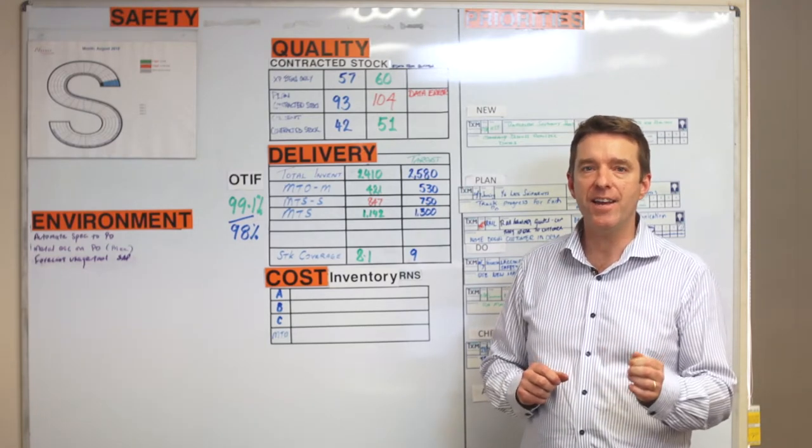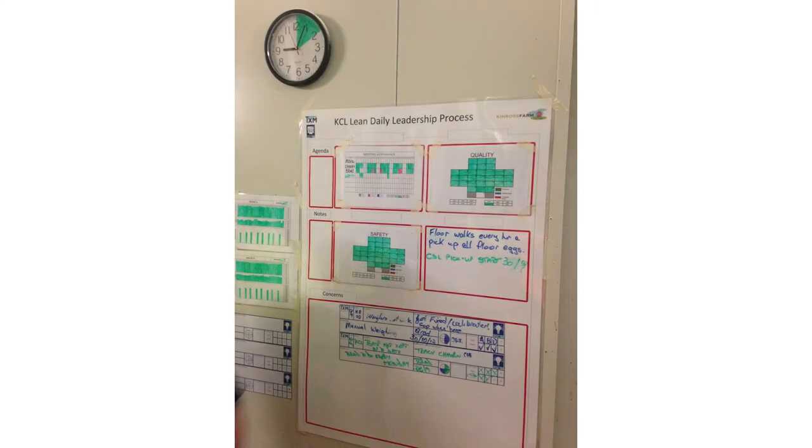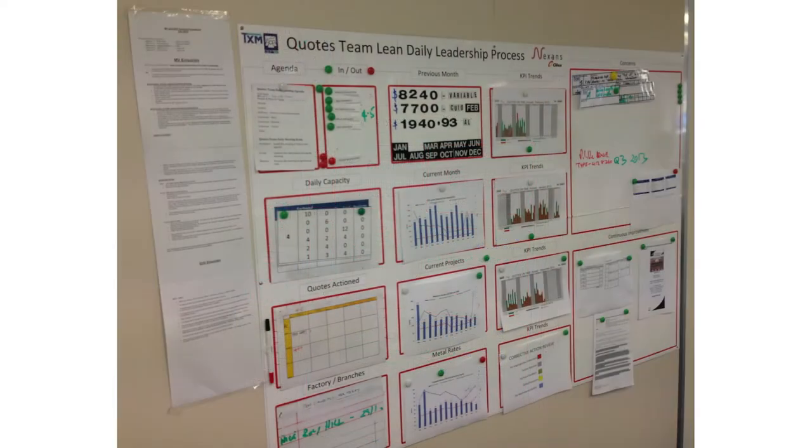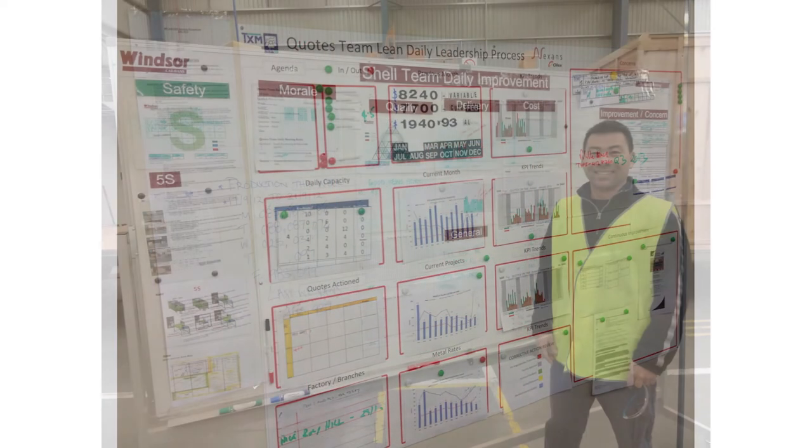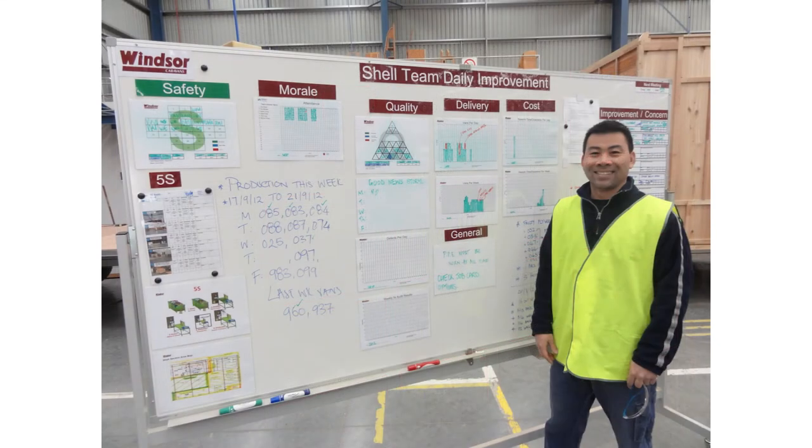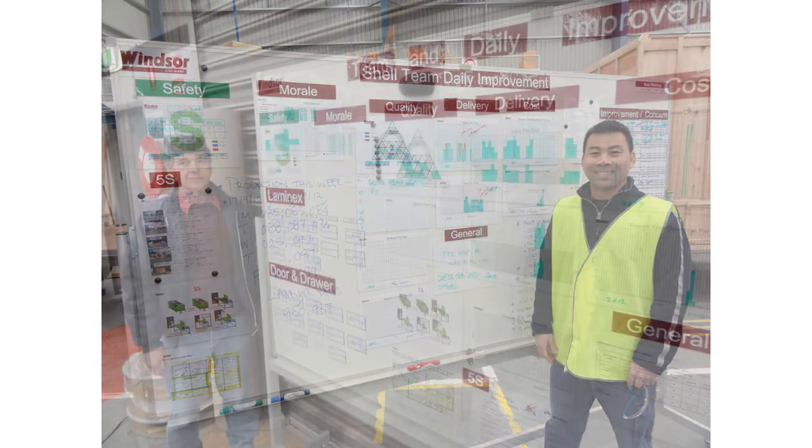The action to take is to show the teams examples of other boards. People need to understand what they are expected to do and seeing examples is a good way for them to know what to consider. Then you ask, what is the most important thing to talk about every day?